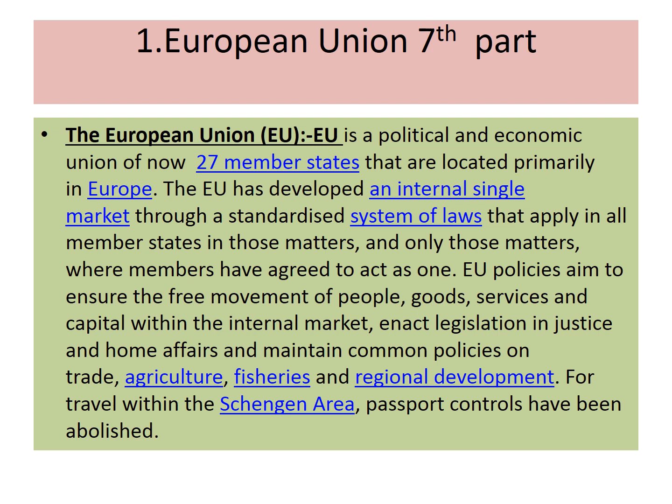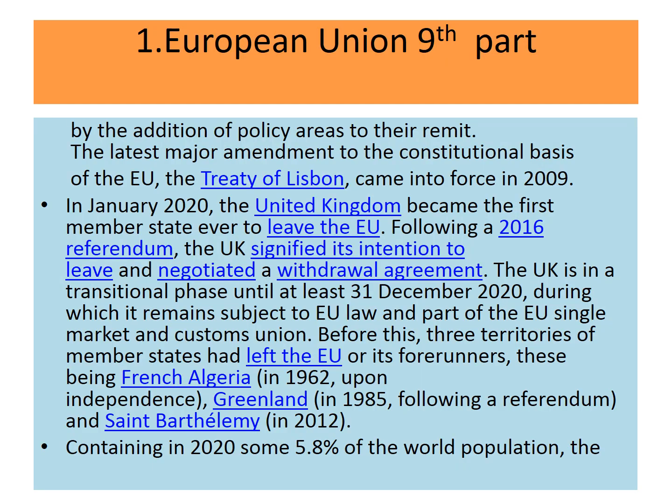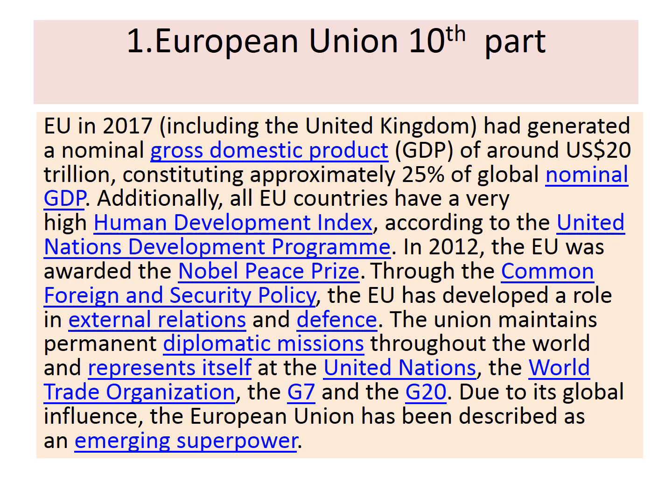The European Union has developed an internal single market through a standardized system of laws that applies in all member states. EU policies aim to ensure the free movement of people, goods, services and capital within the internal market, and enact legislation in justice and home affairs, and maintain common policies on trade, agriculture, fisheries and regional development. Passport controls within the EU have been abolished and monetary union was established among 19 members.